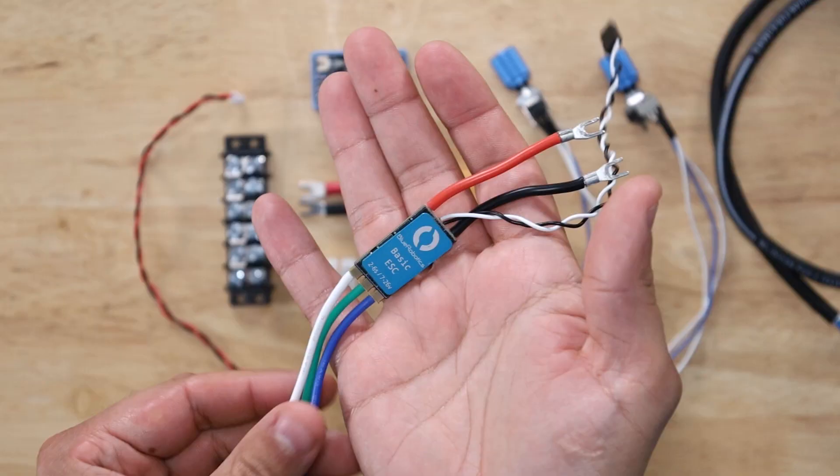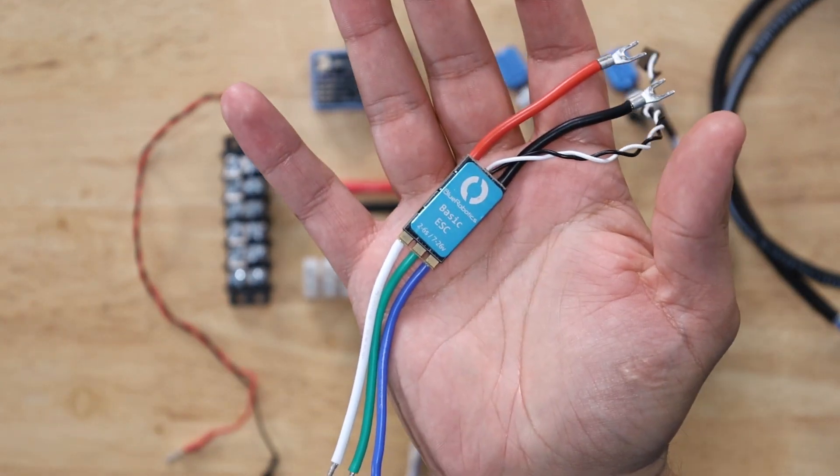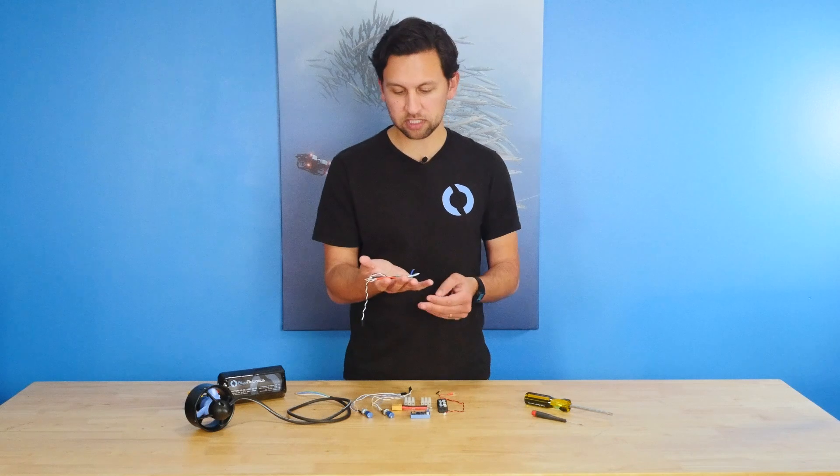Today we're going to be doing that with the Basic ESC right here, which is an electronic speed controller for any sensorless brushless motor, but we're going to be using it on the T200.